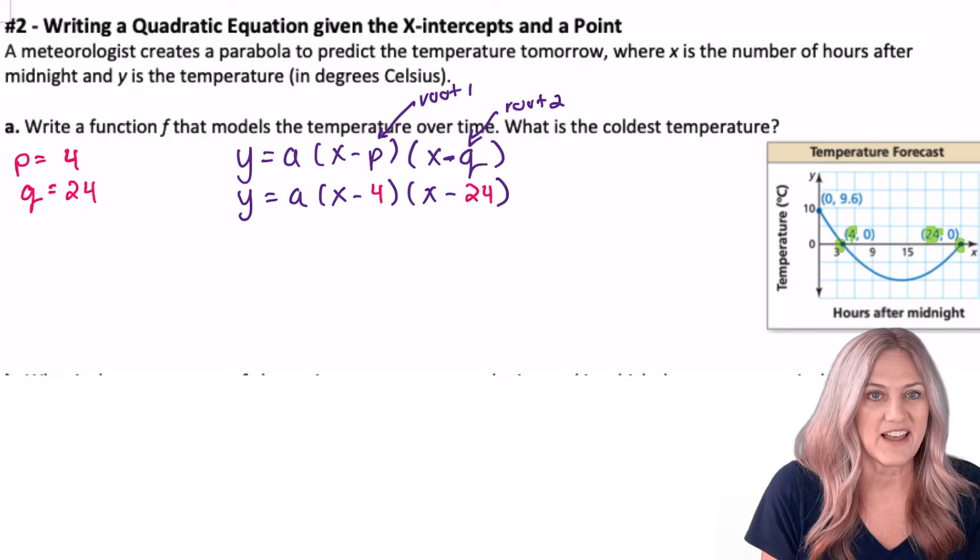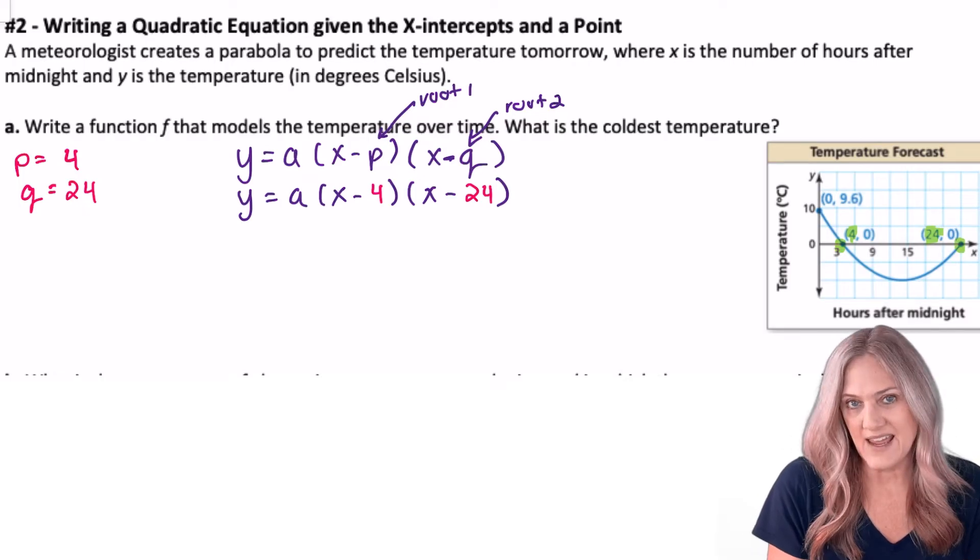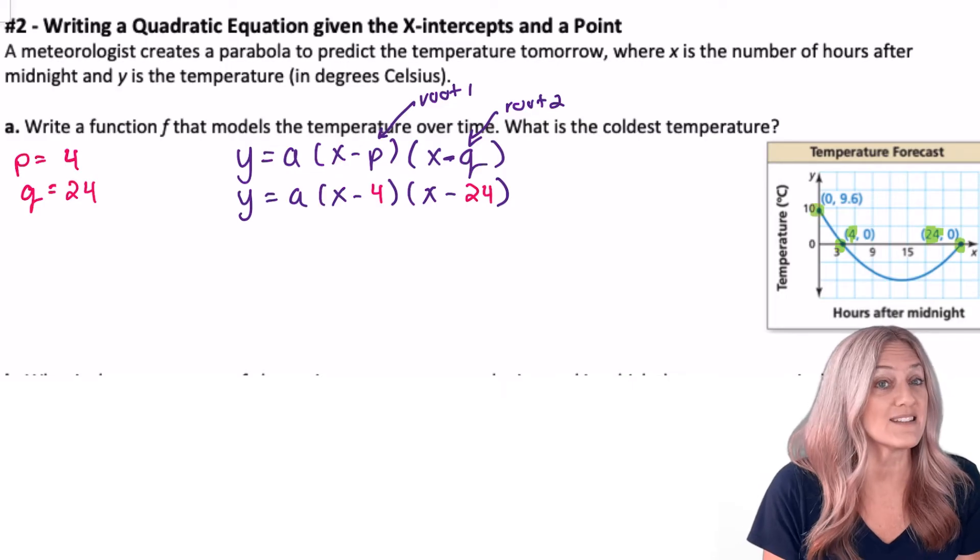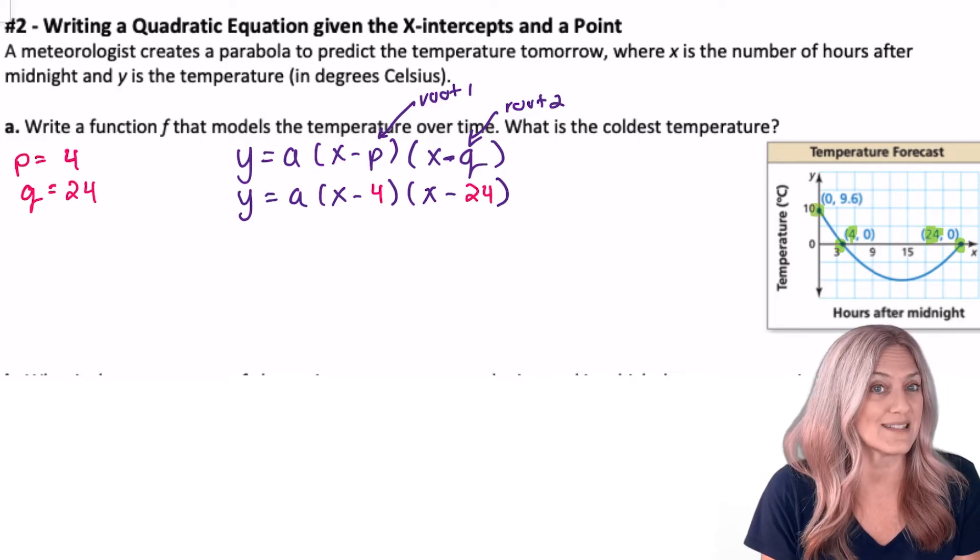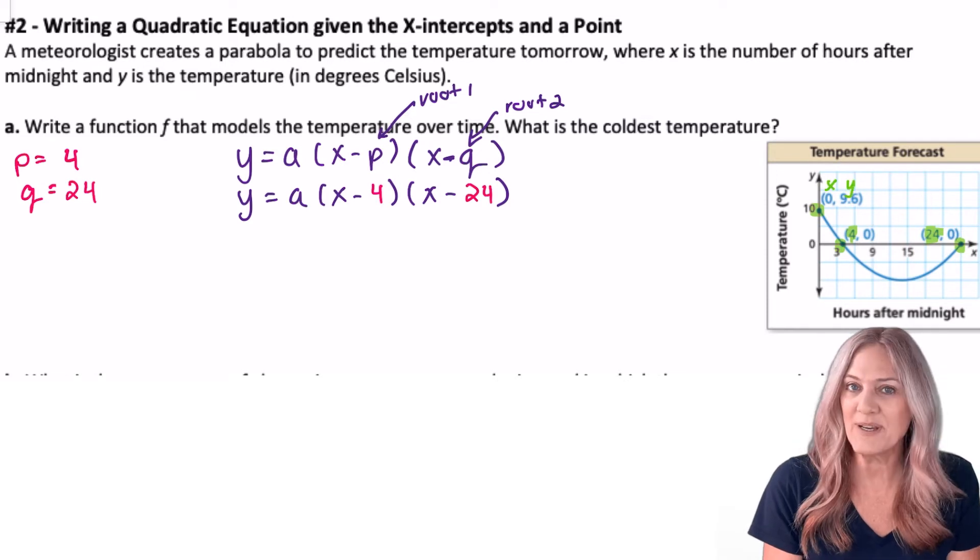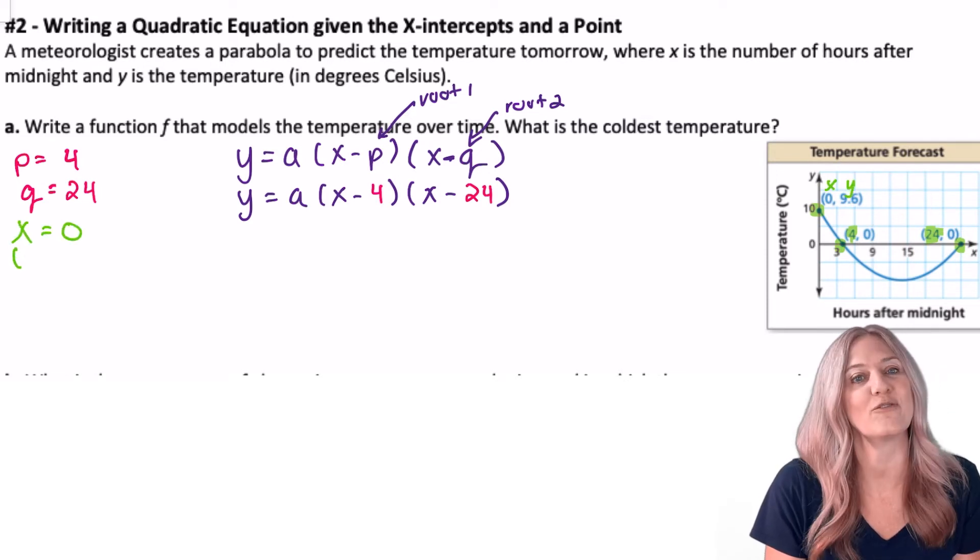Now we have three variables left, x, y, and a. Fortunately, as we look at the graph, we have the y-intercept at (0, 9.6). So I can substitute 0 for x and 9.6 for y and solve for a.